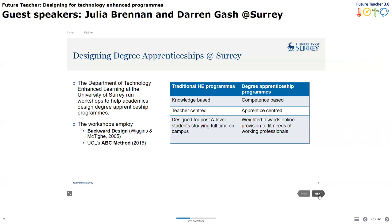Moving towards degree apprenticeships is quite a shift — they need a curriculum that's competence-based and aligned with an apprenticeship award. That means a defined set of knowledge, skills, and behaviors — a whole set of terminology to use in this area. It needs to be apprentice-centered, drawing on professional experience, and our particular offering will be primarily online, fitting the work-life patterns of apprentices. To meet this challenge, Darren and I in the Department of Technology-enhanced Learning have devised a series of workshops to help teams with this design challenge. We used a backward design approach to facilitate a constructively aligned, apprentice-centered, activity-based curriculum, and we also used the ABC method for storyboarding and looking at blended delivery and supporting technologies.